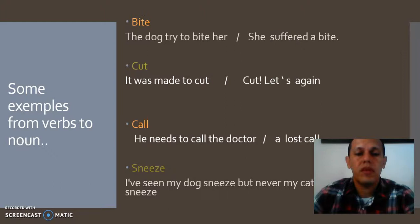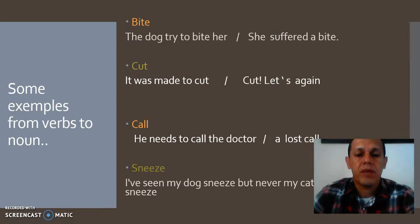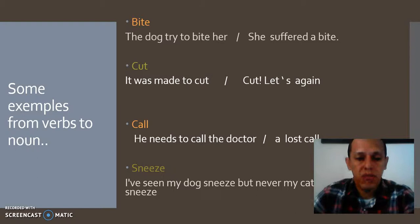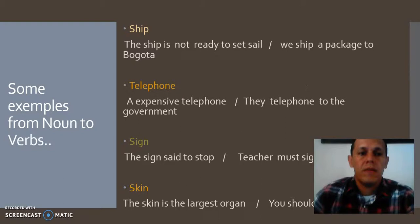'Sneeze' as a verb: 'I have seen my dog sneeze, but never my cat.' In this case, 'sneeze' is a verb. And the other sentence: 'He had a sneeze.' In this case, 'sneeze,' with the same form, is a noun.